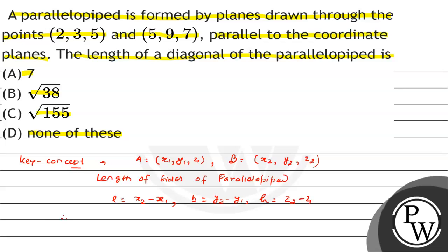Therefore, the diagonal of the parallelepiped will be equal to the square root of L² + b² + h². Using this formula we can solve the problem.